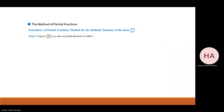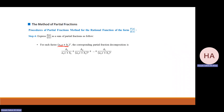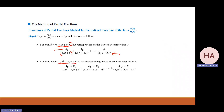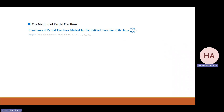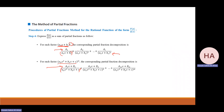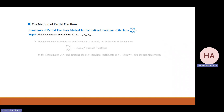Now, for setting up the decomposition: if Q has a linear factor (ax+b)^r, I write terms A₁/(ax+b) + A₂/(ax+b)² + ... up to A_r/(ax+b)^r, where each numerator is just a constant. If Q has an irreducible quadratic factor (ax²+bx+c)^m, I write terms with linear numerators A₁x+B₁, A₂x+B₂, and so on up to power m.